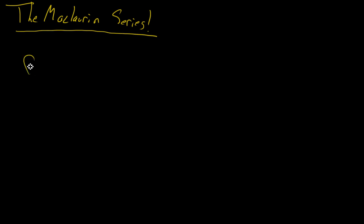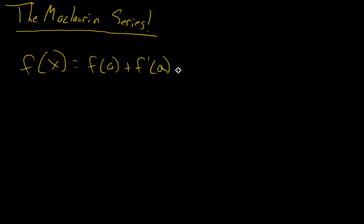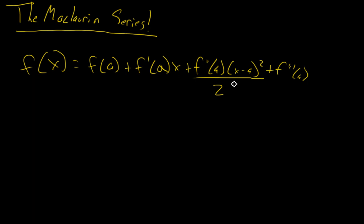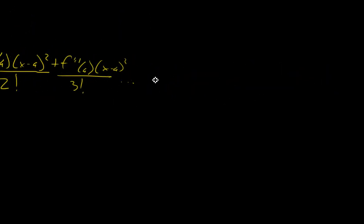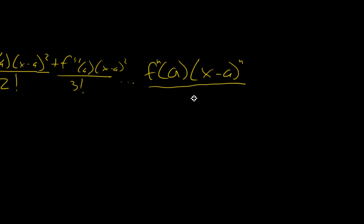And what does that mean? That just means that f of x is equal to f of a, plus f prime of a times x, plus f double prime of a times x minus a squared over 2 factorial, plus the triple prime of a over 3 factorial, and on and on to infinity, where our general term is the nth derivative of f of a, times x minus a to the nth power, divided by n factorial.